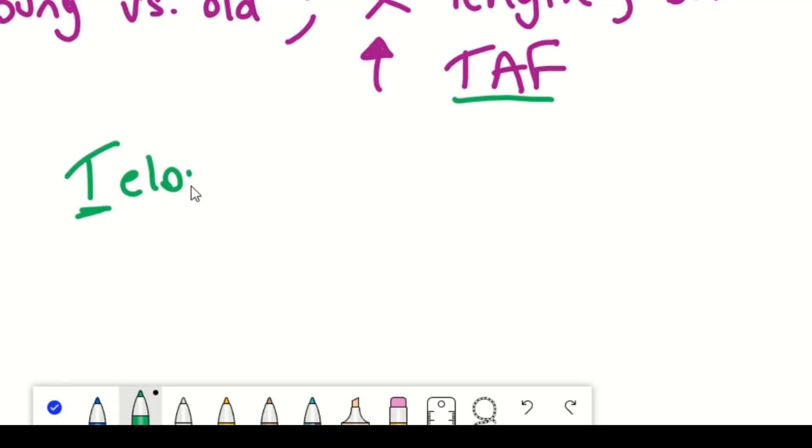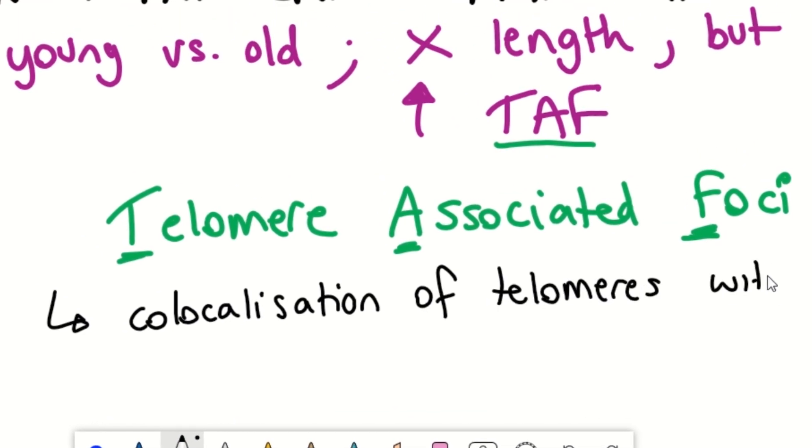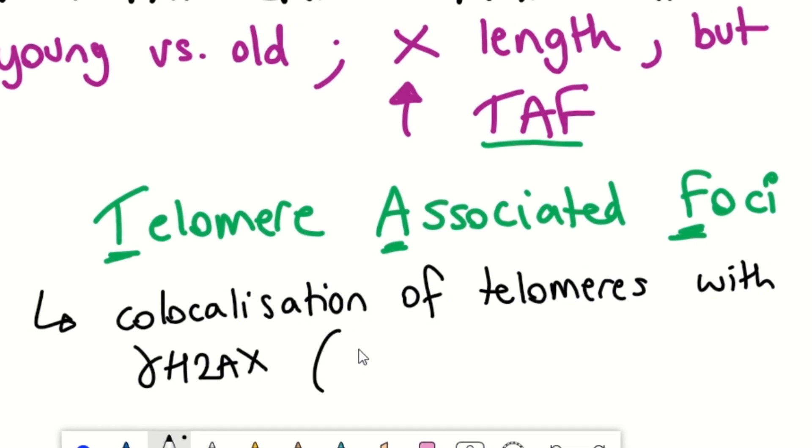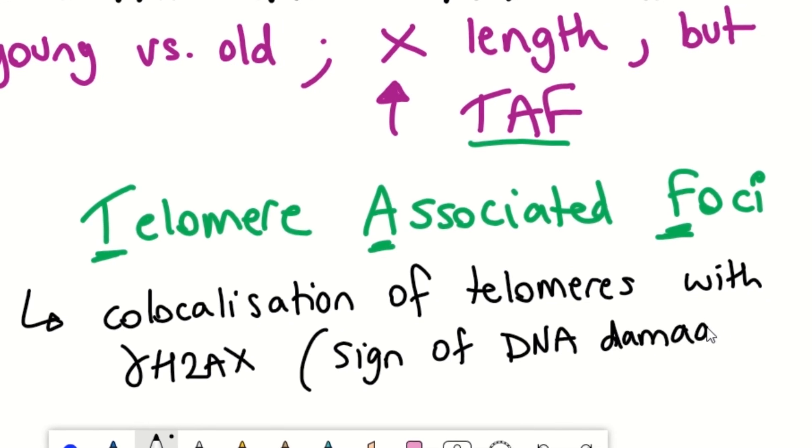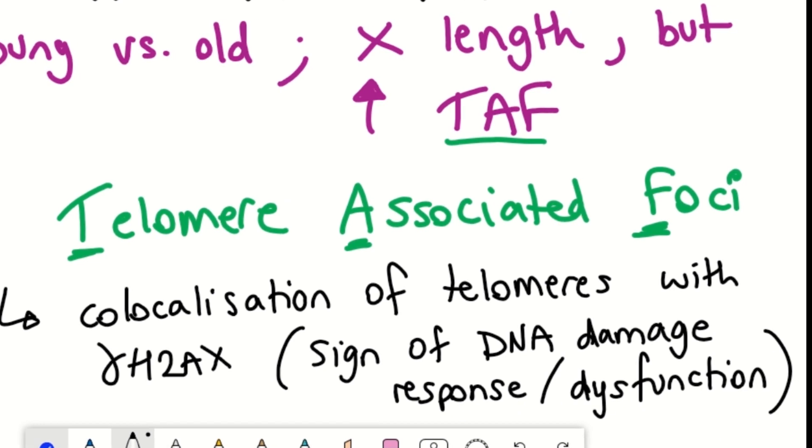But this time, instead of the reduction in length for telomeres, this is damage independent of telomere length. And these characteristics are known as telomere-associated foci, where you have the co-localization of telomeres with gamma H2AX, which is a sign of DNA damage and dysfunction.